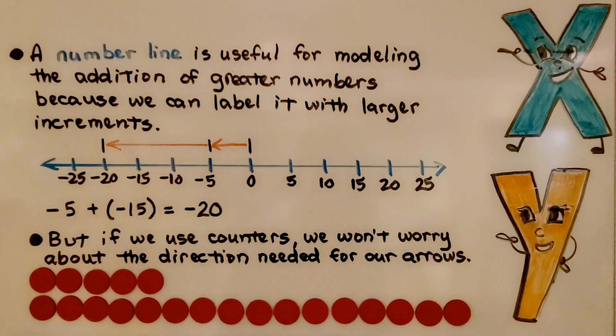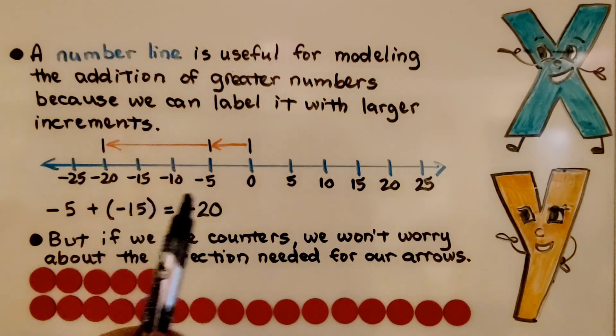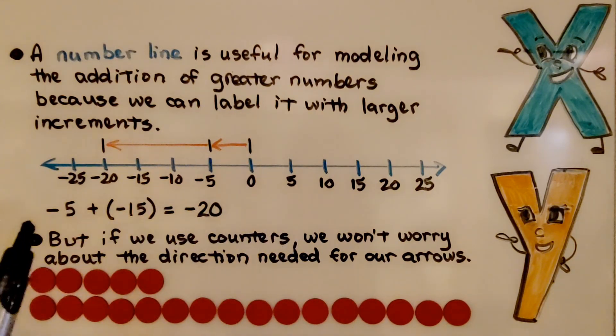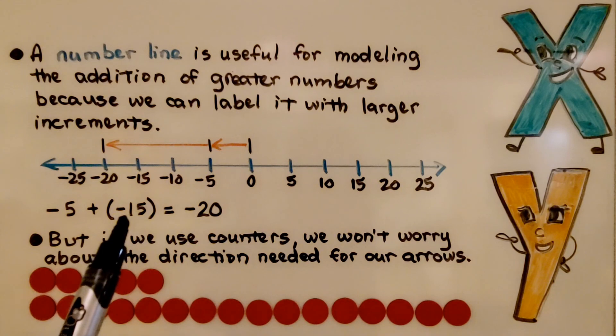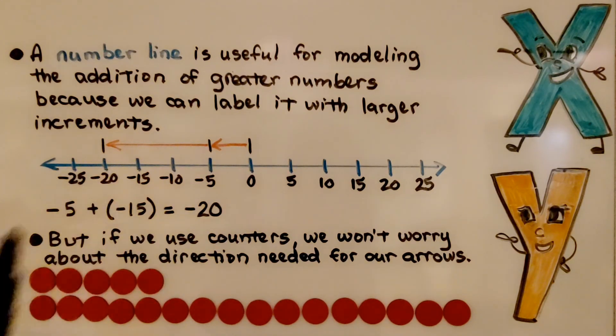A number line is useful for modeling the addition of greater numbers because we can label the number line with larger increments. We have negative five plus negative fifteen. It's equal to negative twenty. But if we use counters, we won't worry about the direction needed for our arrows, but we may use a lot of counters.